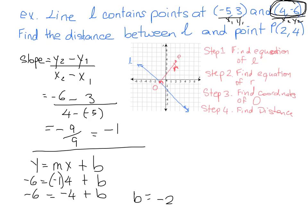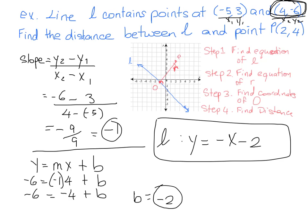All right, so now we have our Y-intercept, and we have our slope. Our slope is negative 1. Our Y-intercept is negative 2. So the equation of line L is Y equals negative X minus 2. So that's our step 1 complete. We found the equation of line L.